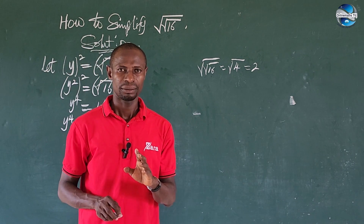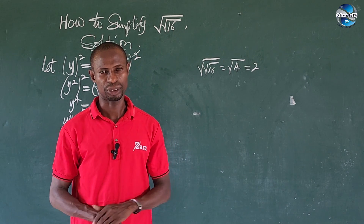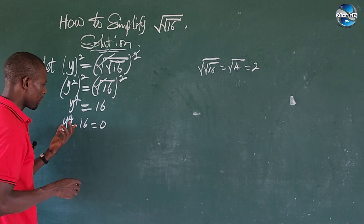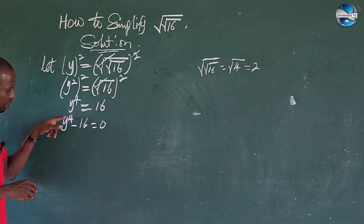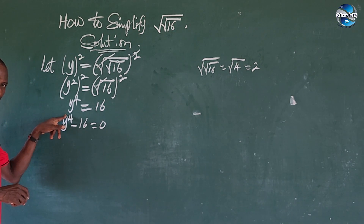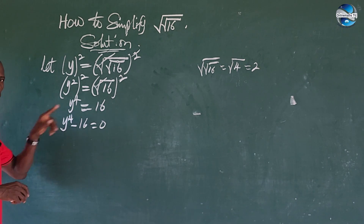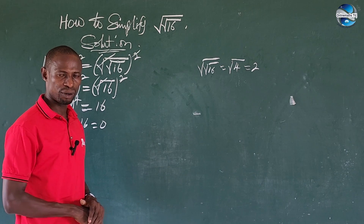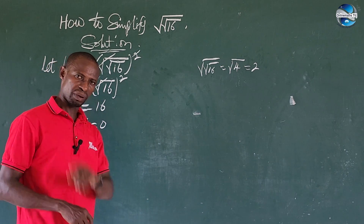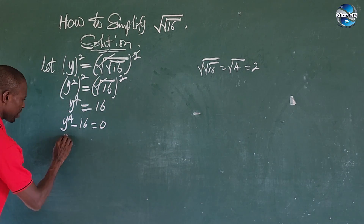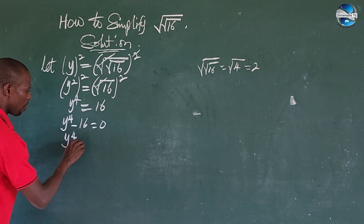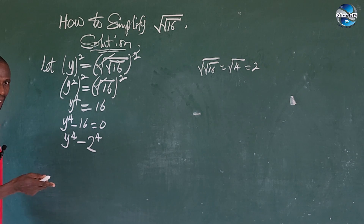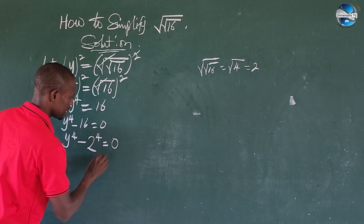Now, 16 can be written as 4 to the power of 2. But looking at the exponent we have — it's 4 — I will bring in a number raised to the power of 4. That number is 2, since 2 to the power of 4 gives us 16. So we have y to the power of 4 minus 2 to the power of 4 is equal to zero.